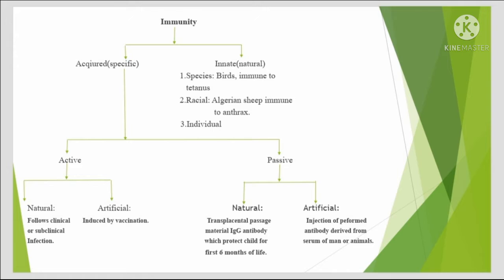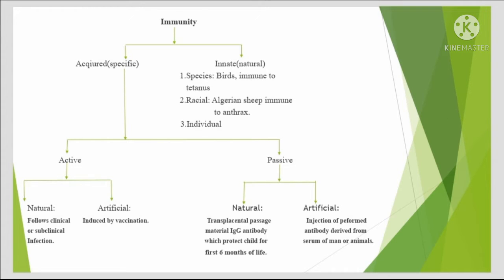Innate immunity is again divided into three types: species immunity — for example, humans are immune to tetanus; racial immunity — for example, Algerian sheep are immune to anthrax as compared to European sheep; and individual immunity — if a large number of people are exposed to a particular infection, some would escape it, others will develop mild infection, and the rest will develop severe infection.